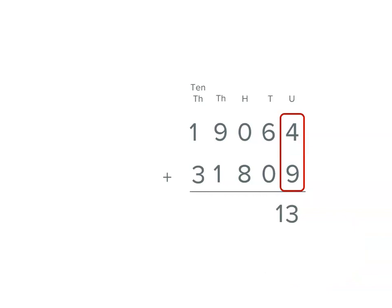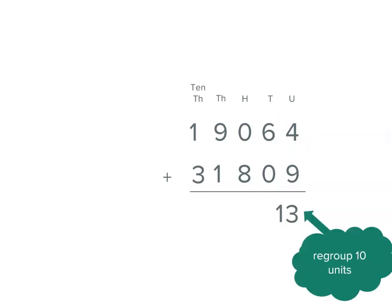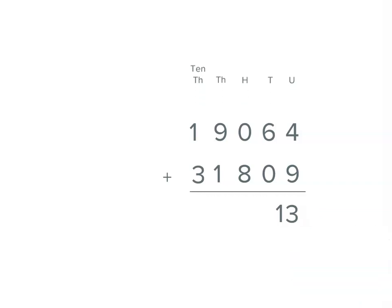Now we can't have more than 9 in any place, so we can do some regrouping. Instead of 13 units, we're going to regroup 10 of those units and actually make it one of the tens. So let's take 10 of the units, which is one of the tens, and put it there. And that means we're just regrouping it, we're not actually changing the value here.